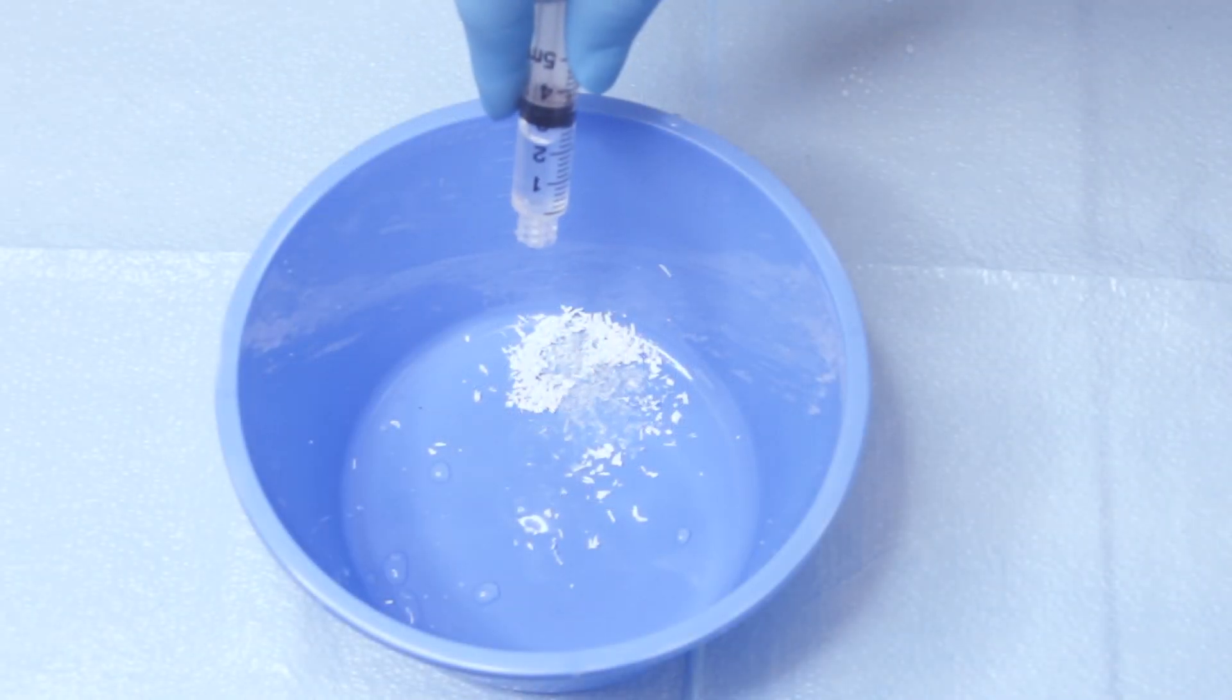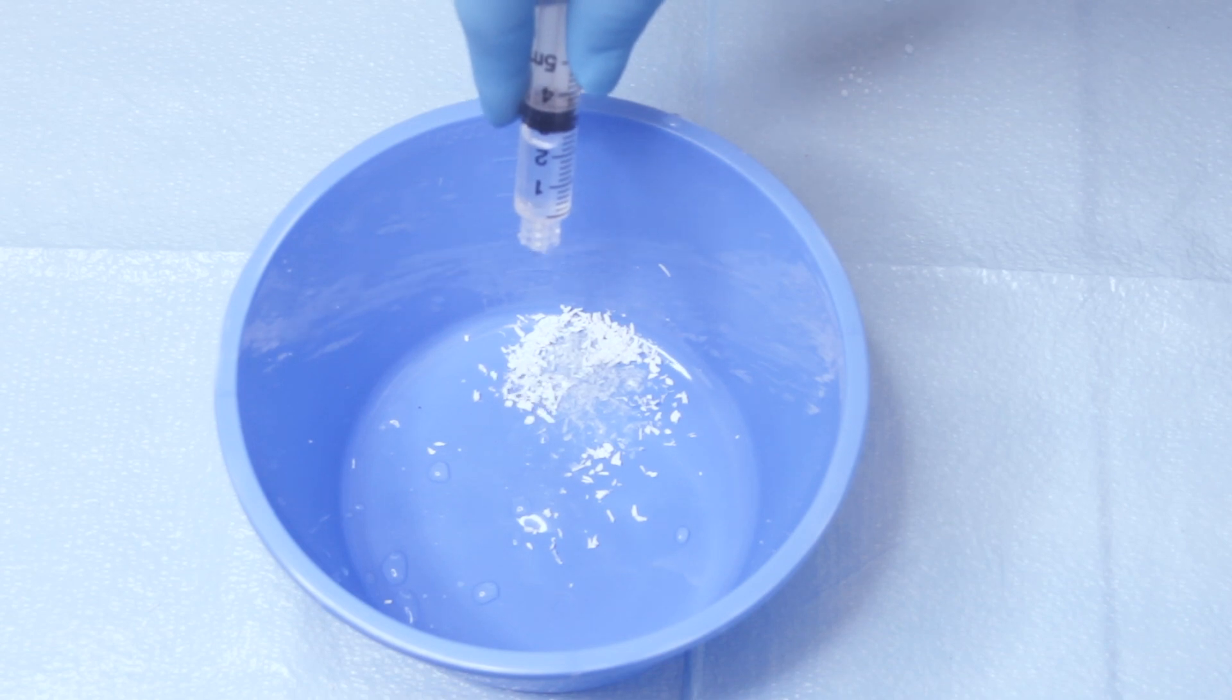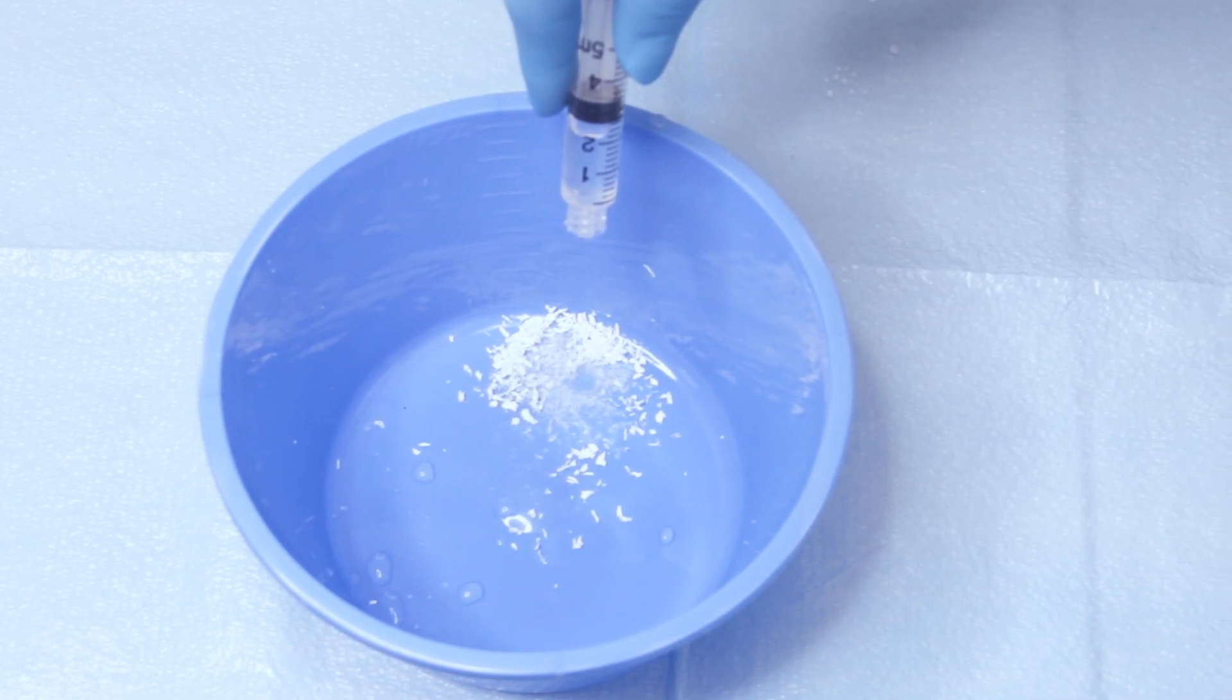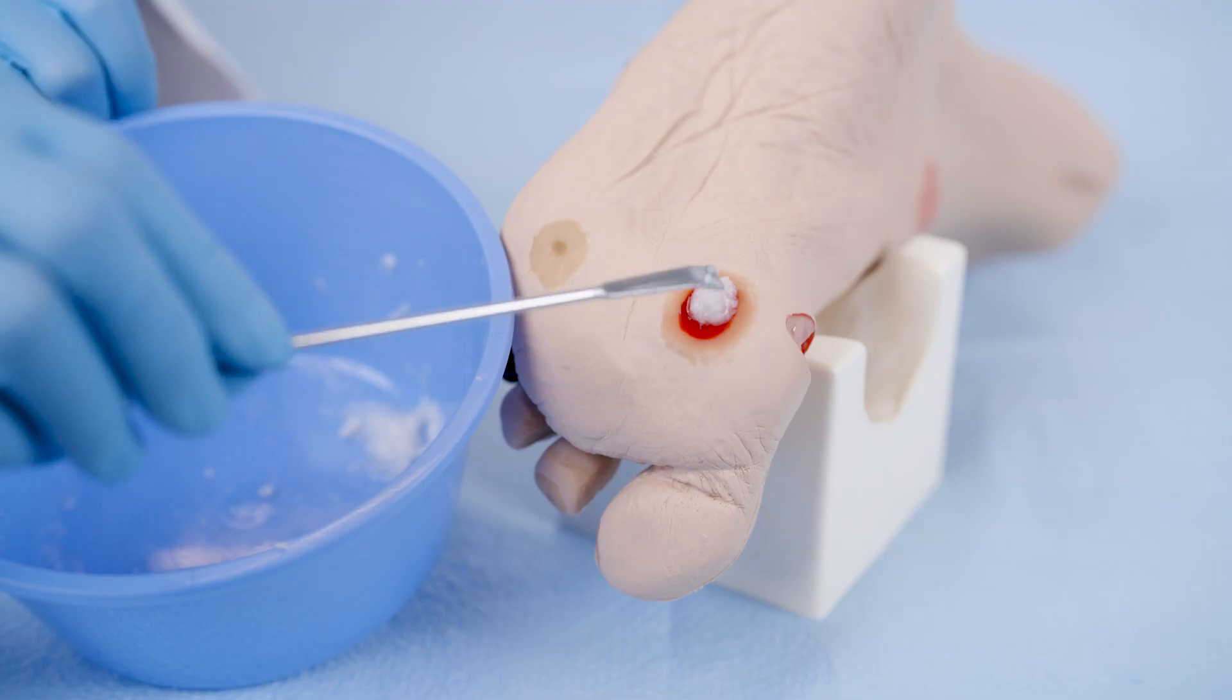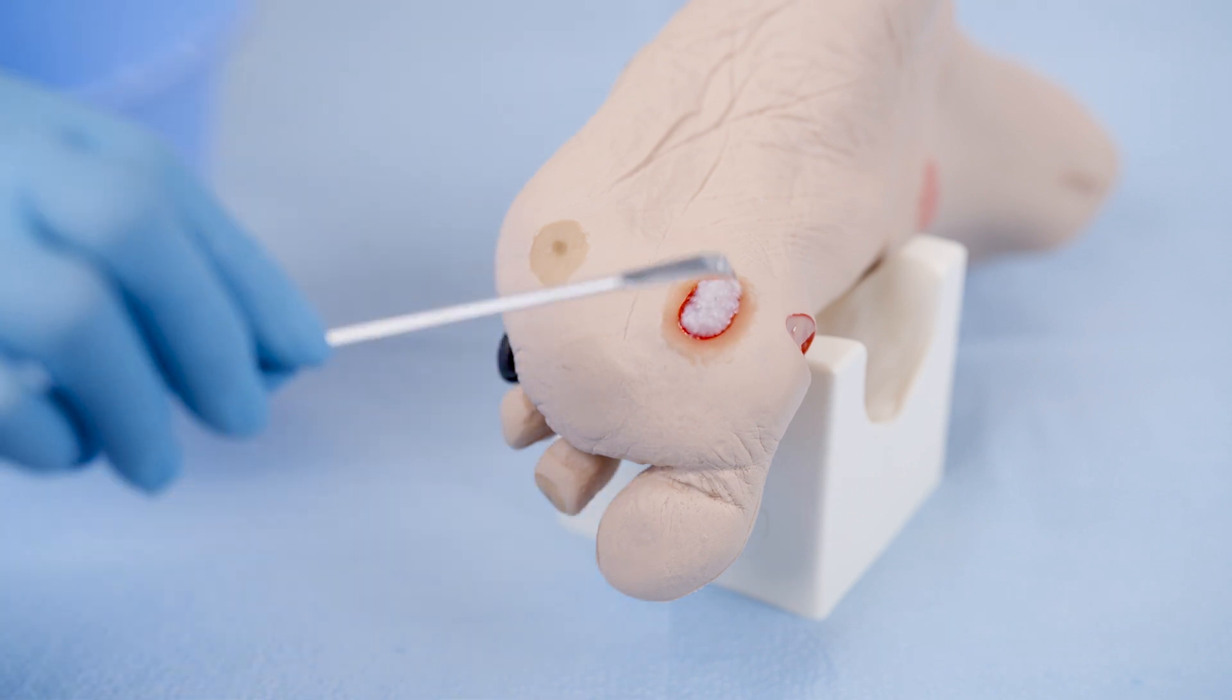For a paste consistency, slowly add sterile saline to the particles until the desired consistency is obtained. Apply the device immediately following preparation for use.